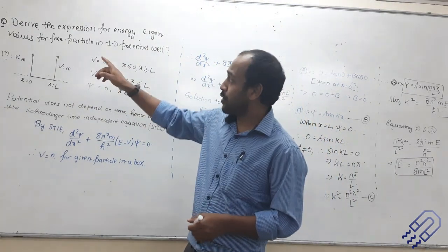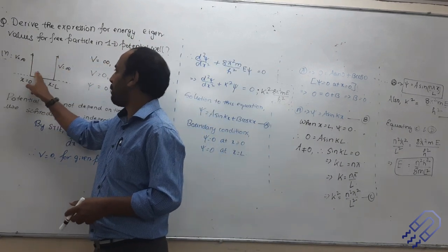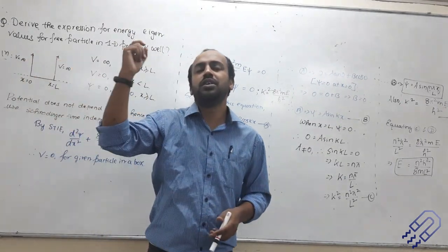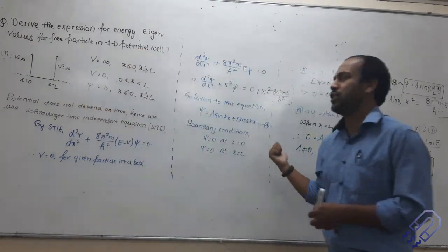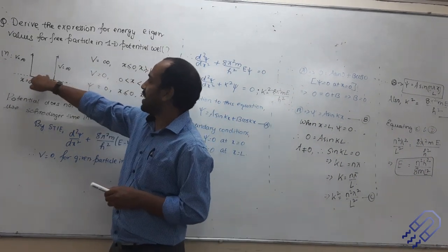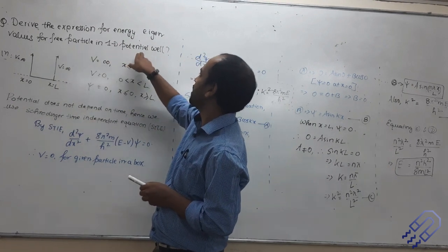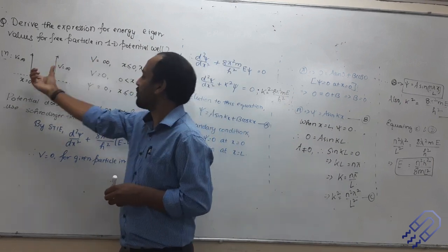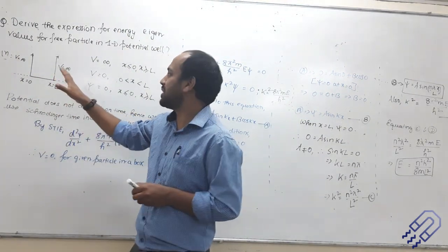Now, what kind of question am I going to ask? Derive the expression for energy eigenvalues. That means if a particle is confined within this very small box, what are its possible energies? That's what we are going to analyze. For a free particle in a one-dimensional potential well — the particle is confined within this box and it is free to move within this box. This is an ideal case.